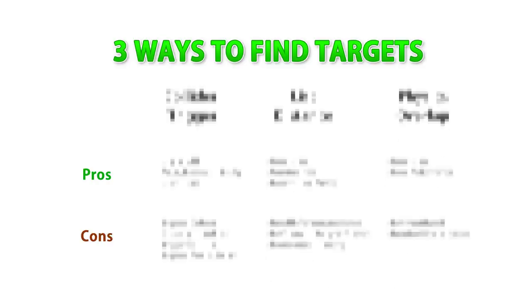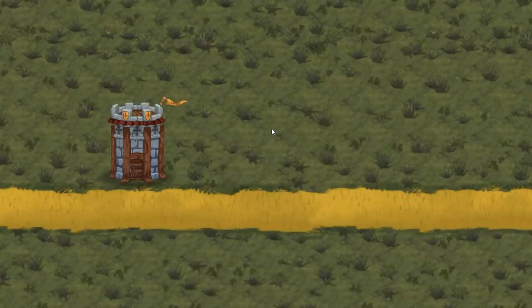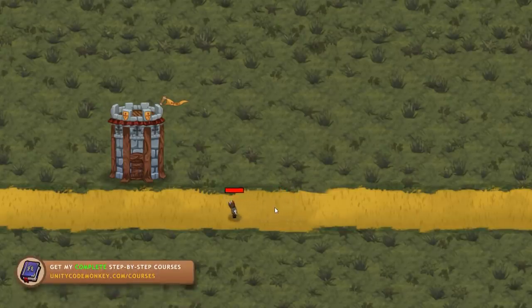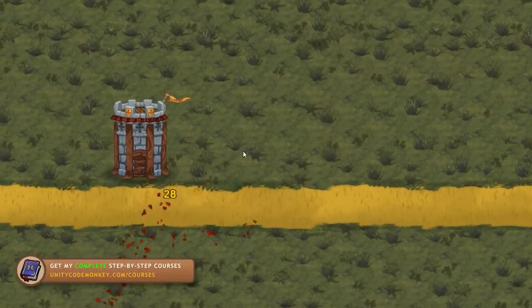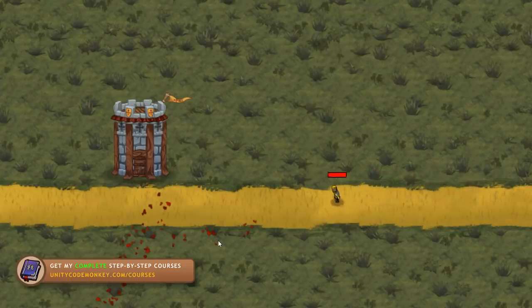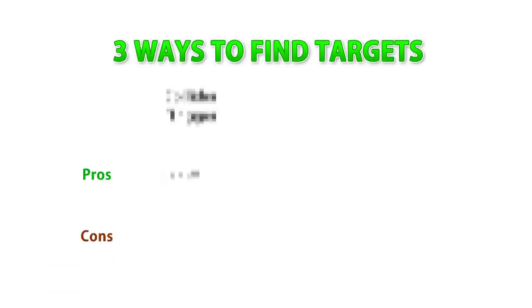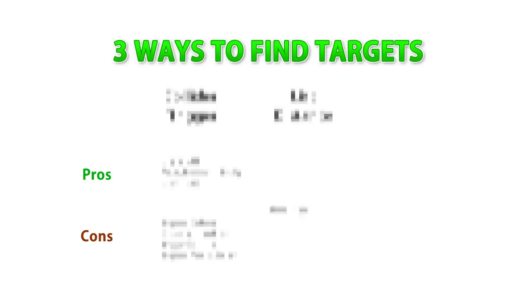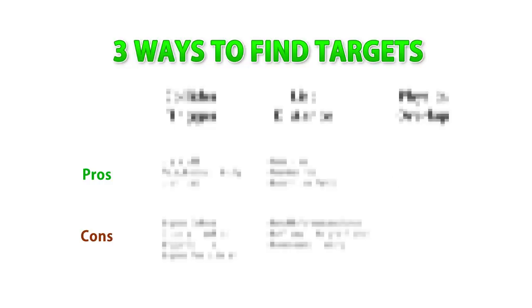You can use this for example in an RTS where units need to find targets, or in a tower defense game for the tower to find something, or even on the player itself to enable them to do some cool abilities with nearby enemies. We're going to first explore each method individually, then explore the pros and cons for each method. All 3 methods are valid depending on the scenario, so it's up to you to choose the right one for your particular use case.